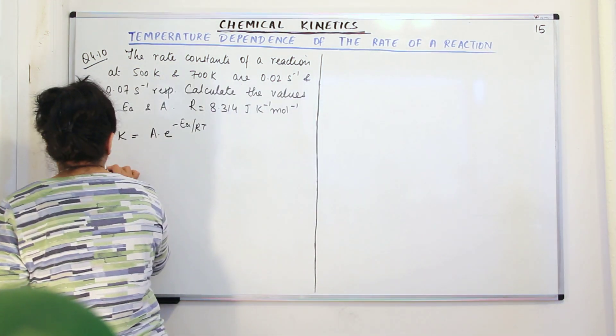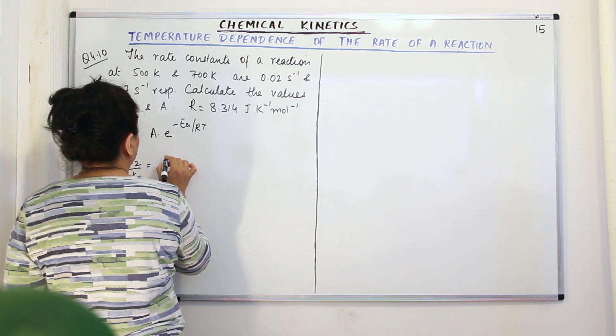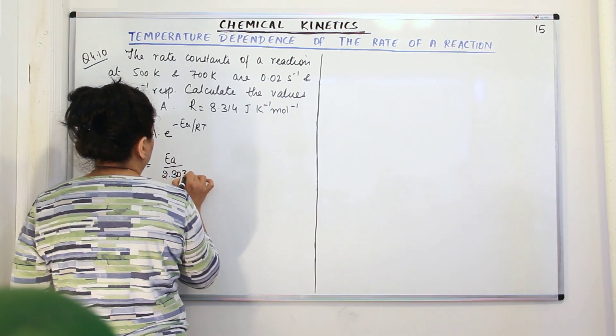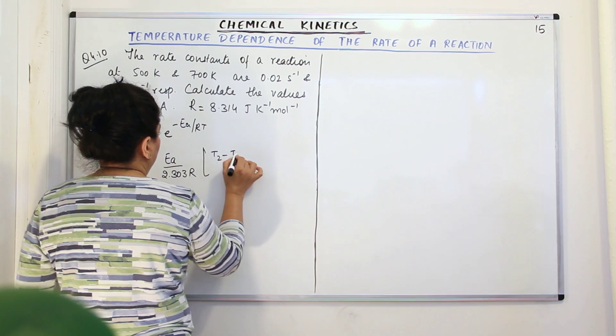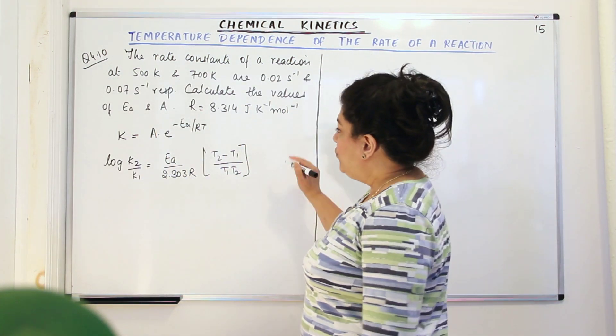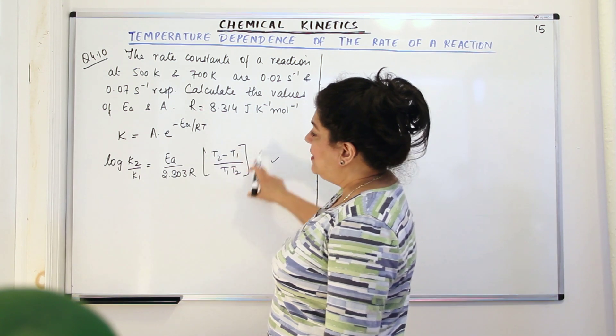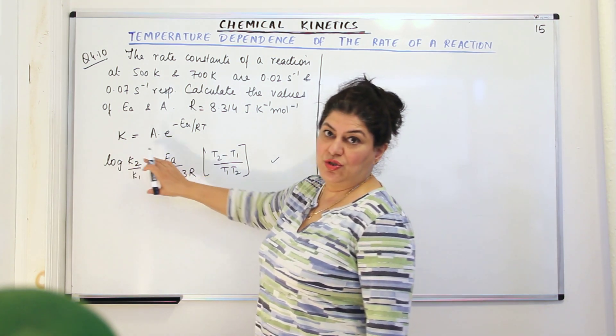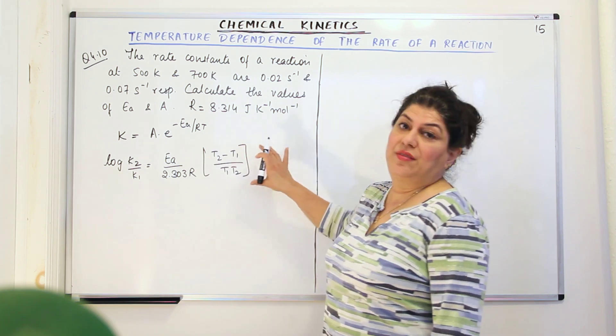And what is that? That is log K2 upon K1 is equal to Ea upon 2.303 R times T2 minus T1 upon T1 T2. So this is the version of the equation that we'll use. We'll be using this version to find out the value of Ea. And since this equation does not have A, the value of A is not there in this equation.